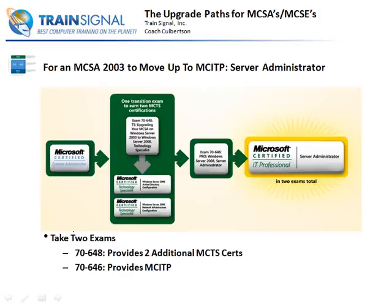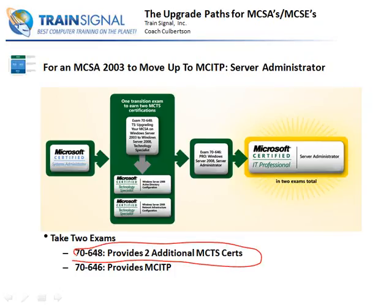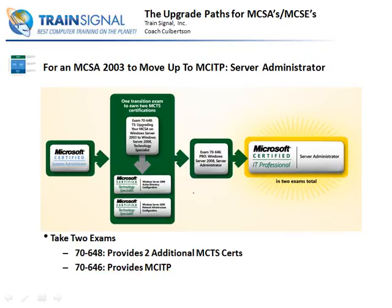Let's talk about upgrade paths from Microsoft for an MCSA 2003. If you've got an MCSA 2003 and want to move up to the equivalent — MCITP Server Administrator — you only need to take two exams. You need to take the 648, which provides you with two MCTS certifications: Active Directory Configuration and Network Infrastructure Configuration. So you get two certs with only one test. Then you still need to take the pro-level test, the 7646, which provides you the MCITP. Pretty simple path from MCSA 2003 to MCITP Server Administrator for Server 2008.